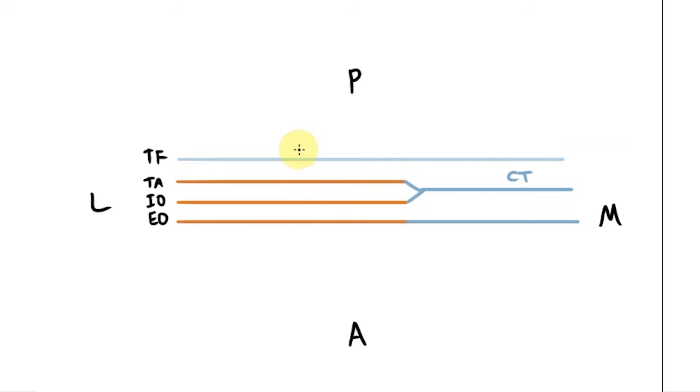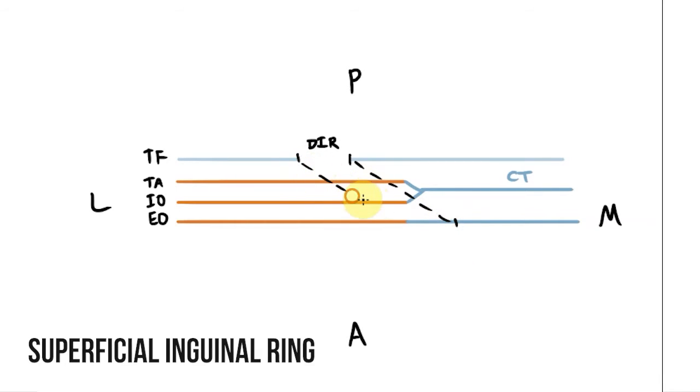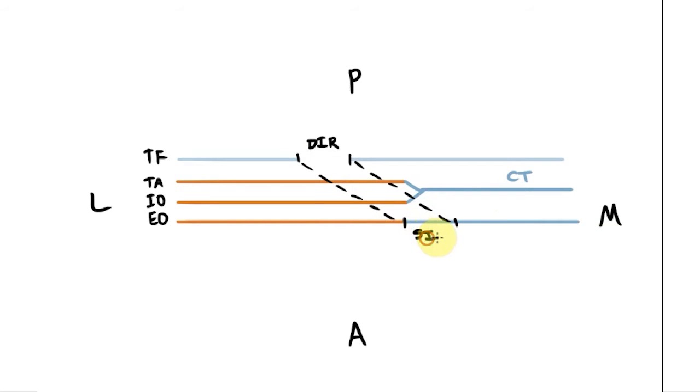The inguinal canal needs to pass through each of these layers. It starts internally at the deep inguinal ring, an oval deficiency in the transversalis fascia found at the midpoint of the inguinal ligament. It then passes anteriorly and medially through the muscular layers, finishing as an opening in the aponeurosis of external oblique, known as the superficial inguinal ring. This can be found just superior to the pubic tubercle.